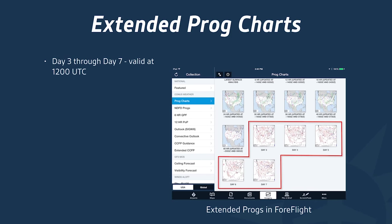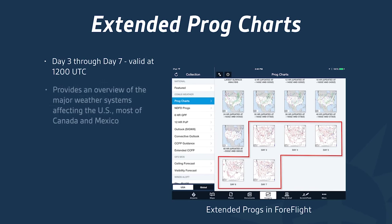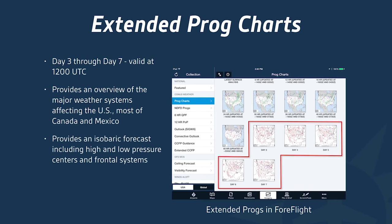The extended prog charts for day three through day seven are all valid at 1200 UTC every day. Like the regular prog charts, they provide an overview of major weather systems affecting the U.S., most of Canada, and Mexico, including high and low pressure centers and frontal systems. However, there's no precipitation forecast — instantaneous precipitation is very difficult to forecast at that range. These are also issued by forecasters at the Weather Prediction Center.